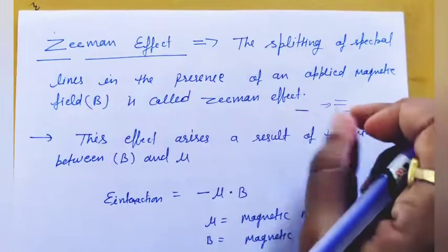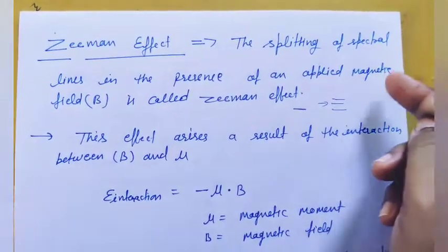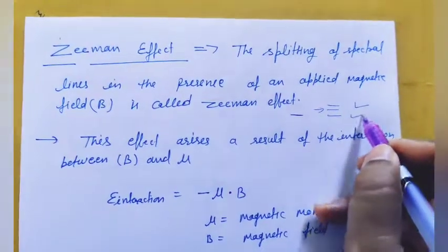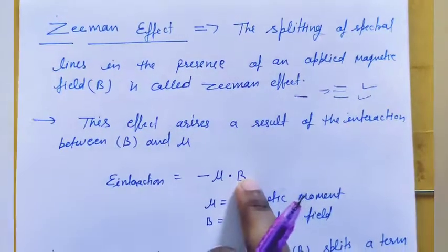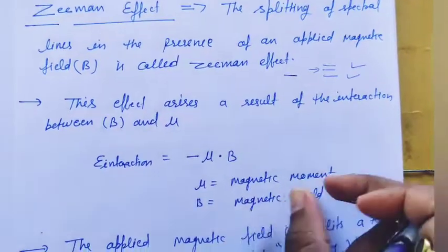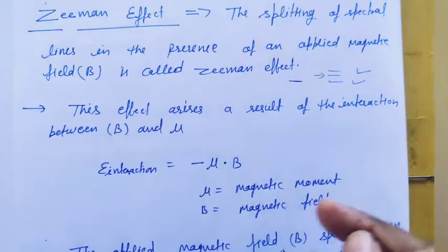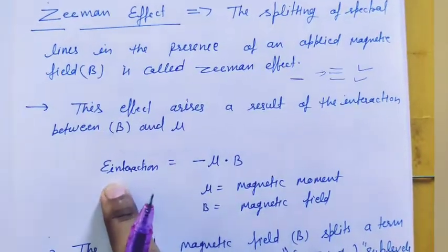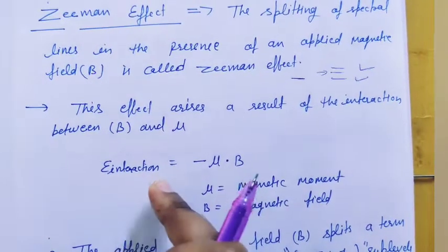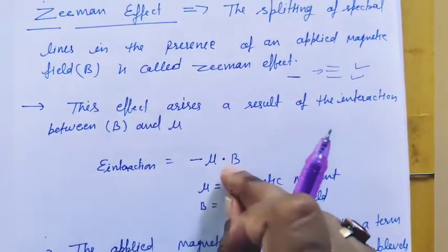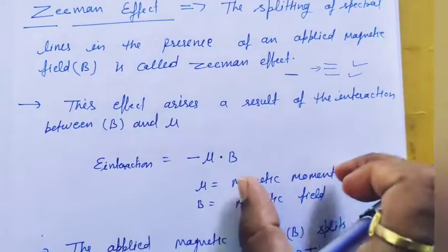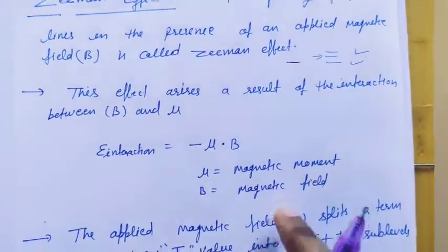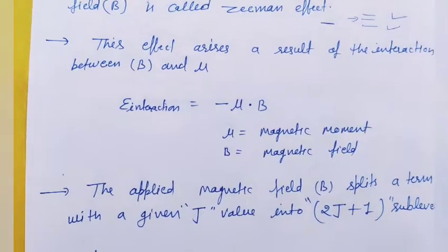The splitting occurs in the presence of an externally applied magnetic field, and the whole effect is called the Zeeman effect. The Zeeman effect involves the interaction of the magnetic moment with the applied magnetic field. The potential energy of this interaction is minus mu dot B, where mu is the magnetic moment and B is the magnetic field.